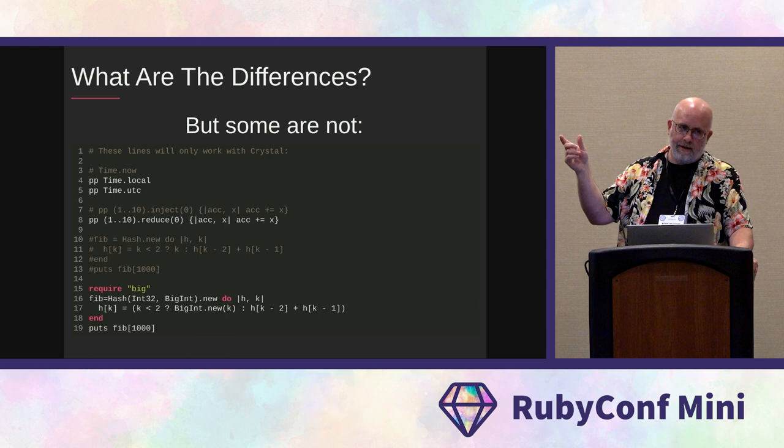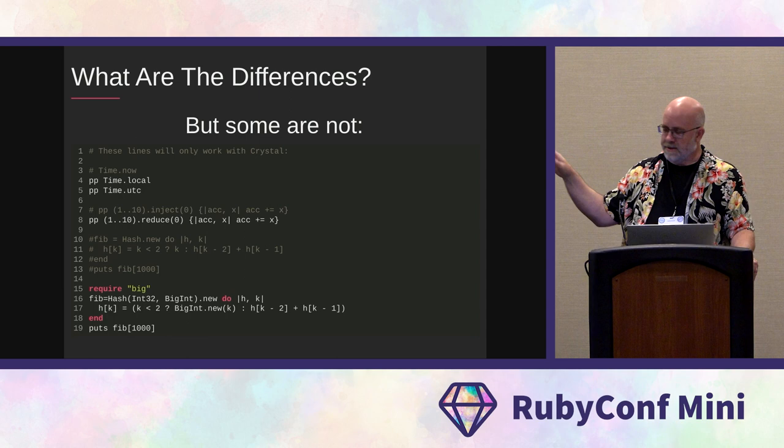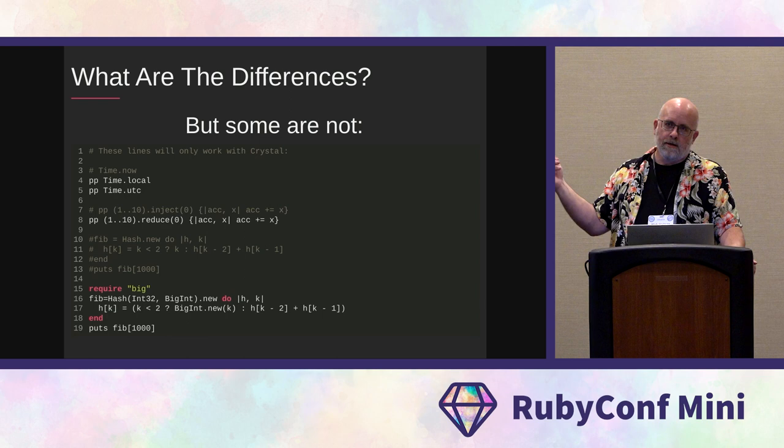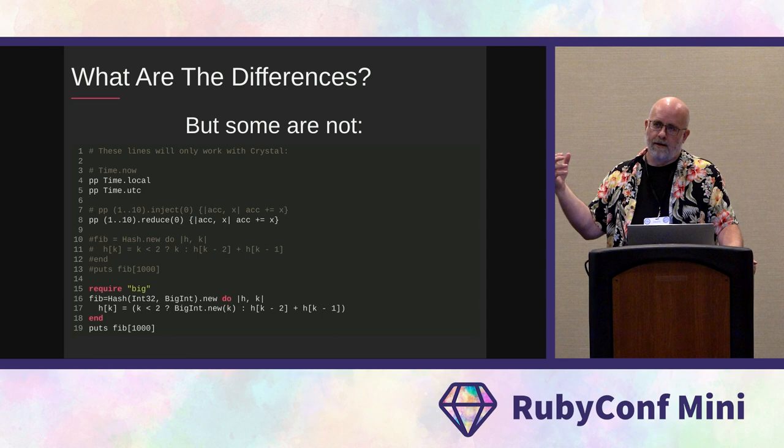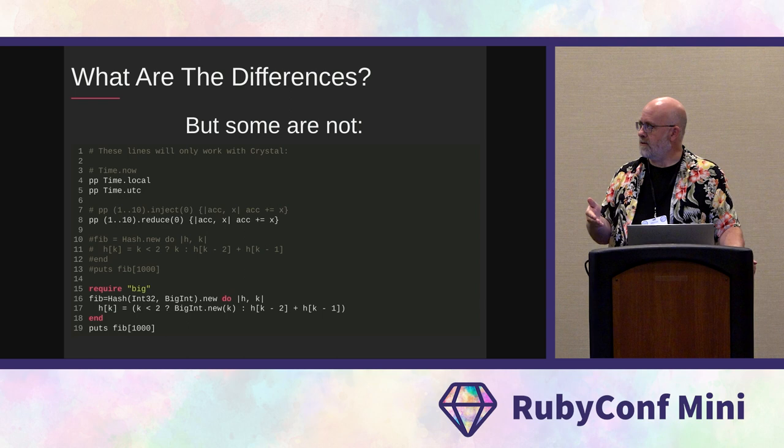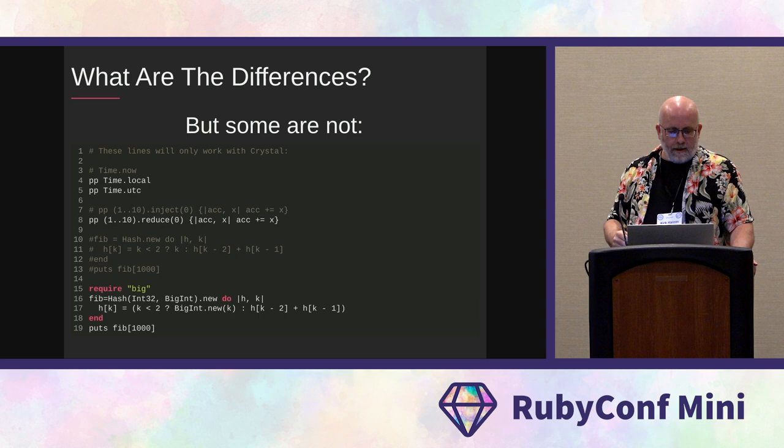Inject is another one — inject on an array to loop over it, execute a block, and gather up a result — it's called reduce in Crystal. A lot of these name changes are inspired by Go. Where there are name changes, in many cases it was because the authors thought another language, typically Golang, had named it in a way that made more sense. So rather than carrying on with the Ruby influence, they chose something that was clearer or made more sense to them.